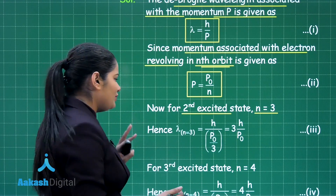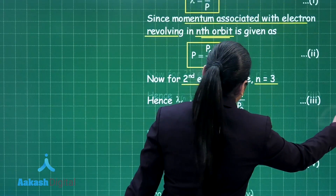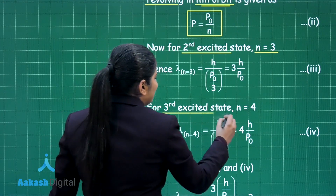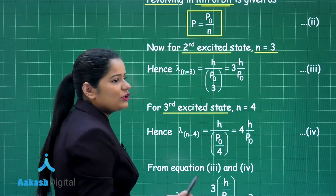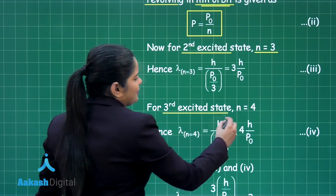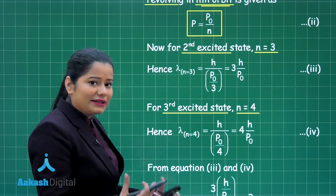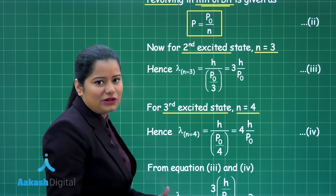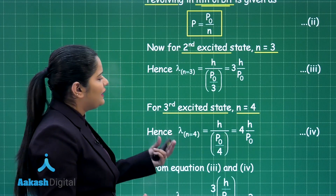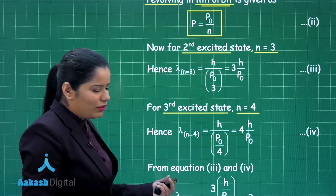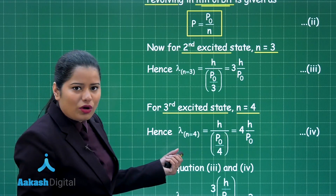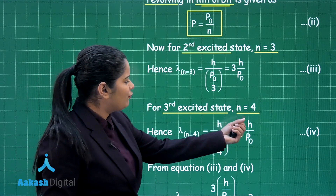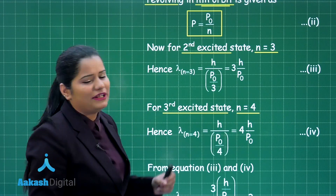When we calculate this for the third excited state, we put n as 4. The momentum for this excited state comes out to be p naught by 4. When we calculate the de Broglie wavelength, that comes out to be 4h by p naught.